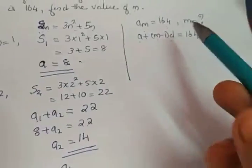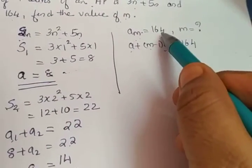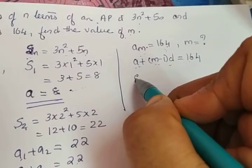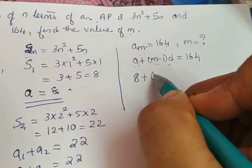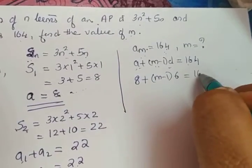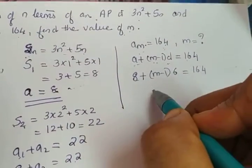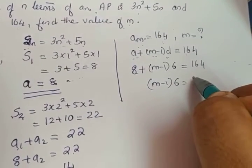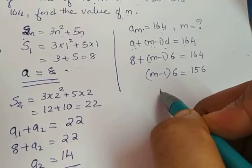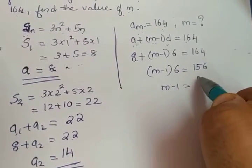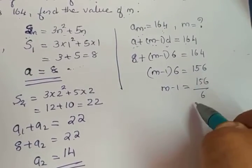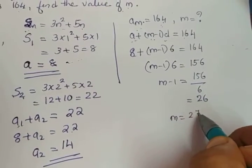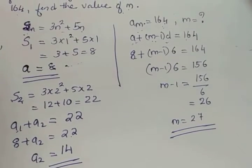Now applying the formula: am = a + (m-1)d = 164. Substituting a = 8 and d = 6: 8 + (m-1)×6 = 164, so (m-1)×6 = 156, giving m - 1 = 26. Therefore m = 27.